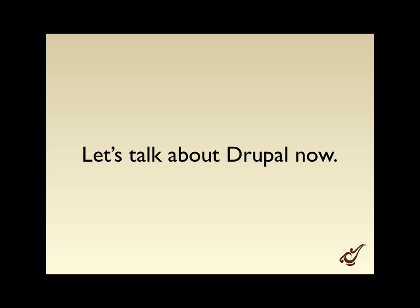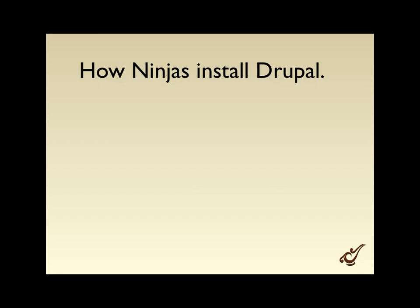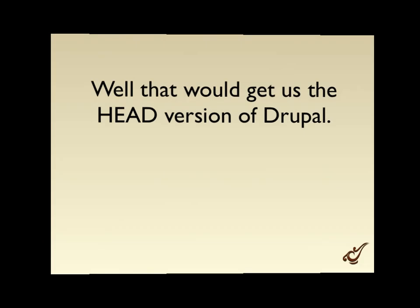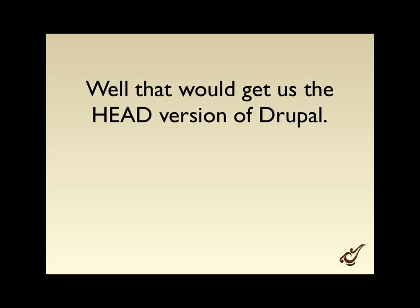So let's get into Drupal. How do ninjas install Drupal? Basically, if you type in the CVS checkout command, you're going to be doing a CVS checkout of Drupal. You've got parameters specifying where to get this checkout from — the anonymous user at the cvs.drupal.org server in this repository. You do a CVS checkout to pull versioned information from Drupal.